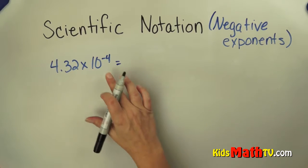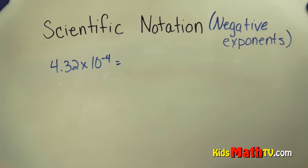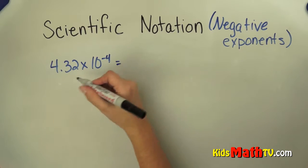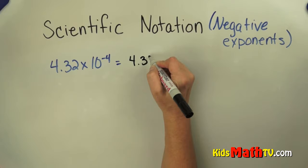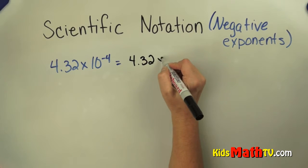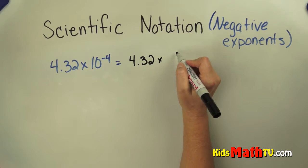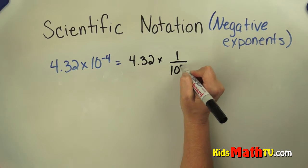We can use our exponent rules to help us with this. We can rewrite this as 4.32 times 1 over 10 to the 4th.